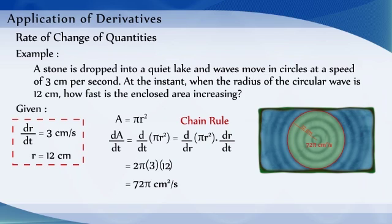Therefore, the enclosed area is increasing at the rate of 72π cm² per second when the radius equals 12 cm.